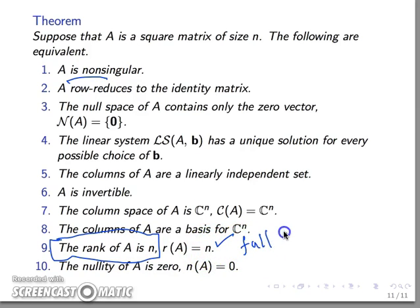The nullity is always given by number of columns minus the rank. In such case we would have n minus n because the rank is n so the nullity would be 0. In other words, the dimension of the null space for a non-singular matrix is 0 and the dimension of the column space for a non-singular matrix is equal to the number of columns.